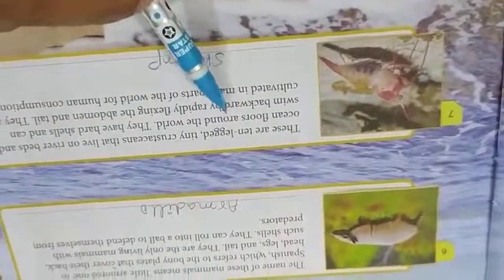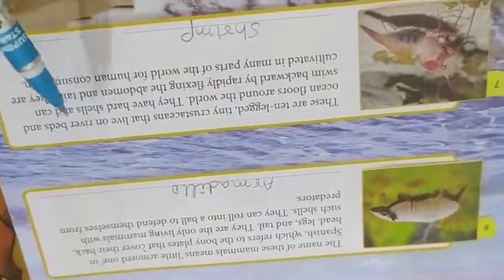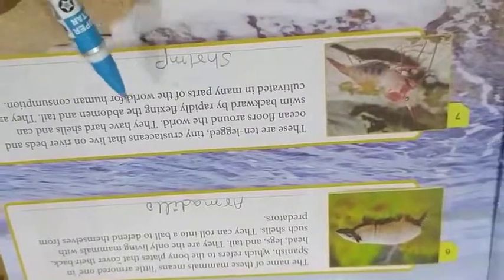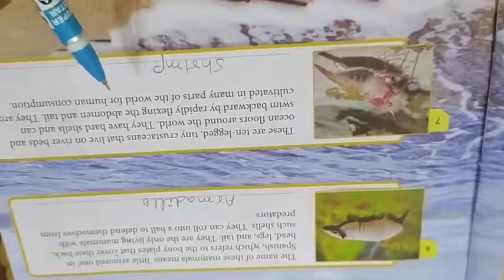And the last one. These are 10-legged tiny crustaceans that live on river beds and ocean floors around the world. They have hard shells and can swim backward by rapidly flexing their abdomen and tail. They are cultivated in many parts of the world for human consumption. It is shrimp.